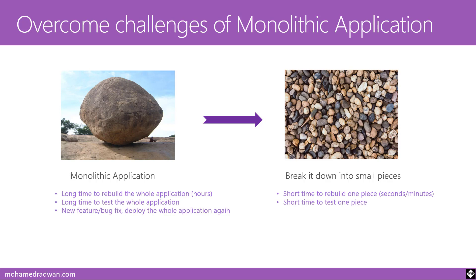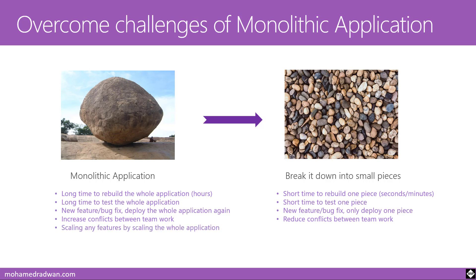For deployment, with a monolithic app you need to deploy the whole application again for any new feature or bug fix, whereas with microservices you just deploy the piece that changed. Monolithic applications also increase conflicts between team members since everyone works on the same codebase, while microservices reduce those conflicts. For scaling, with a monolith you must scale the whole application, but with microservices you can scale only the services needed — for example, just the registration service — giving much better resource utilization.